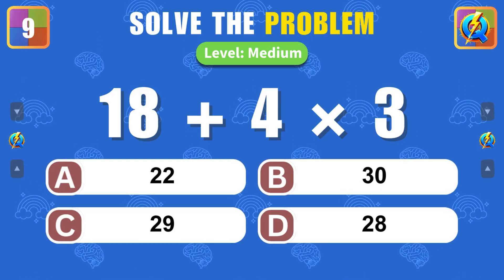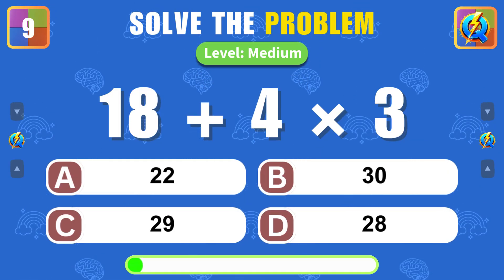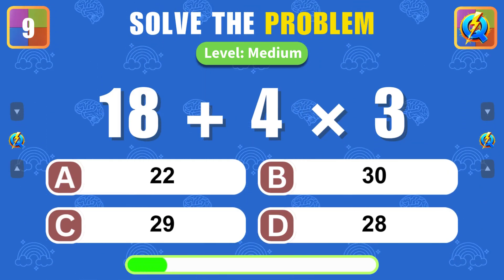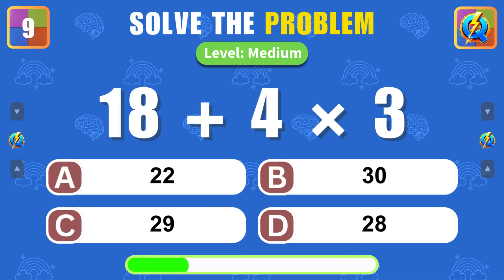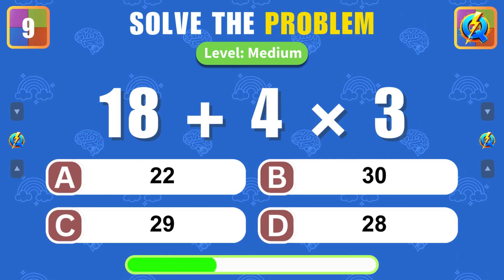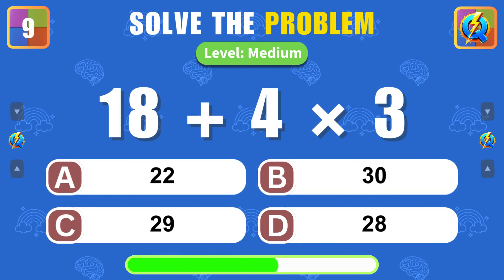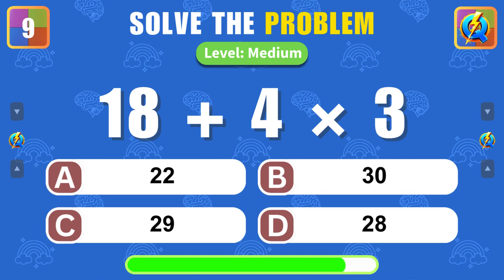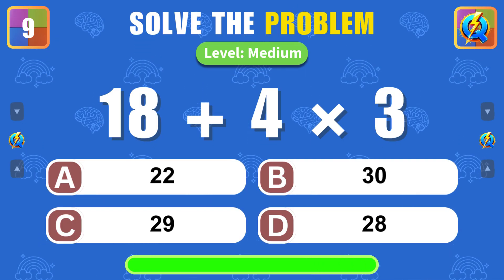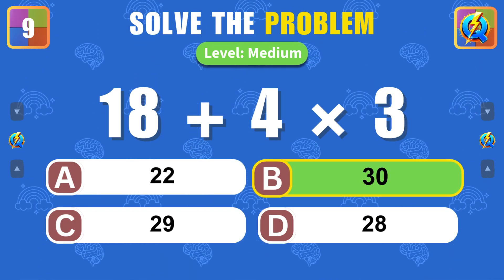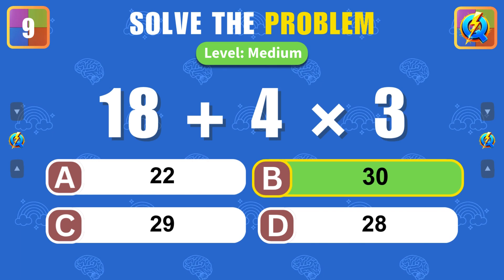What is the result of 18 plus 4 times 3? Bravo! The answer is 30.